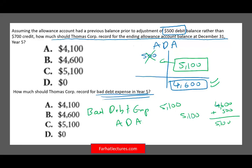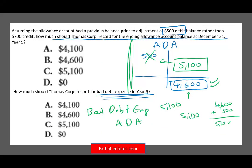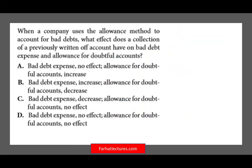Here's a trick to remember. After you compute your target balance, if you have a prior credit balance, take the target minus the credit: $4,600 minus $700 equals $3,900, which is your journal entry. If you have a prior debit balance, take the target plus the debit: $4,600 plus $500 equals $5,100, which is your journal entry. For more explanation, go to farhatlectures.com intermediate accounting.